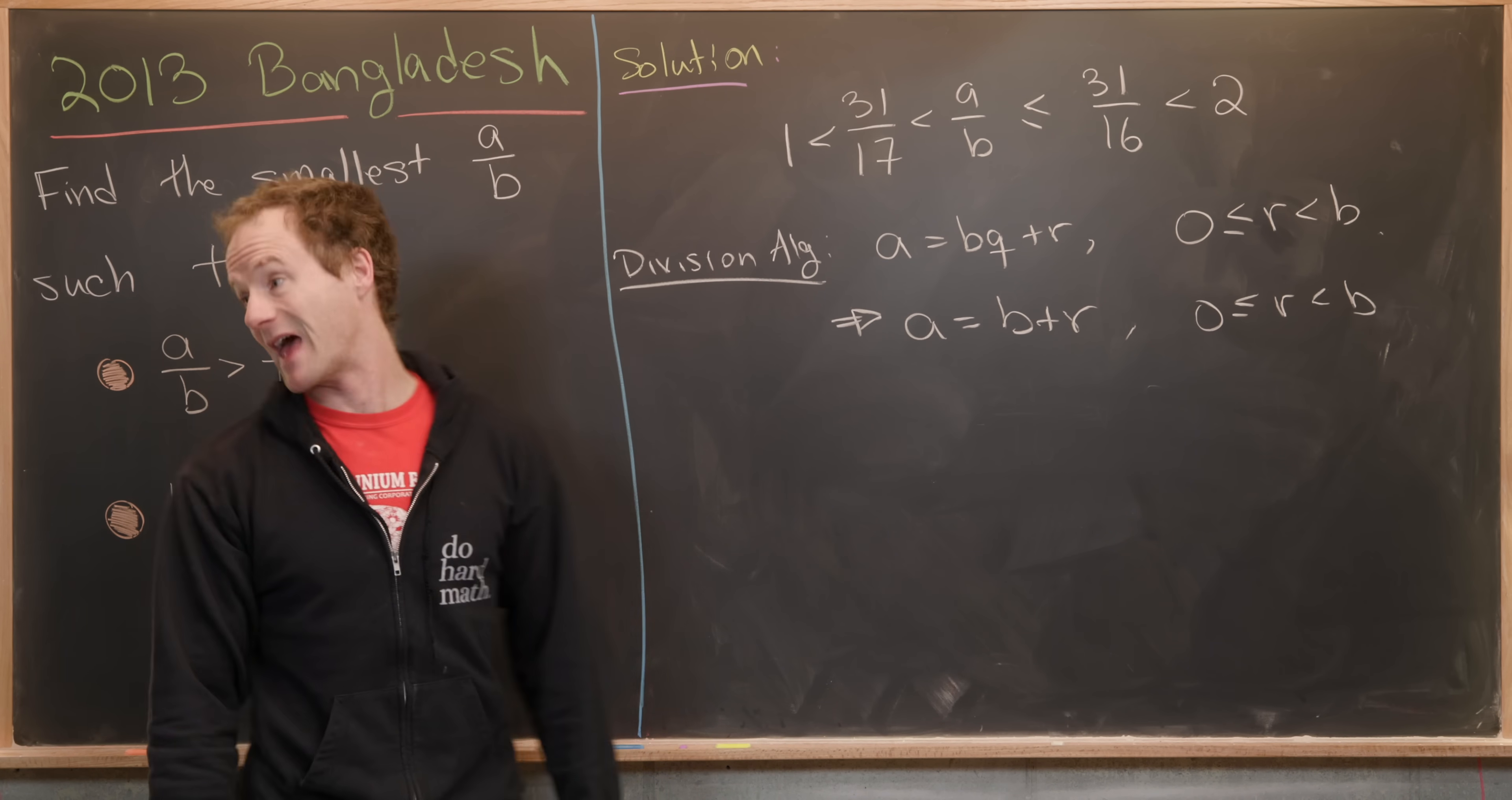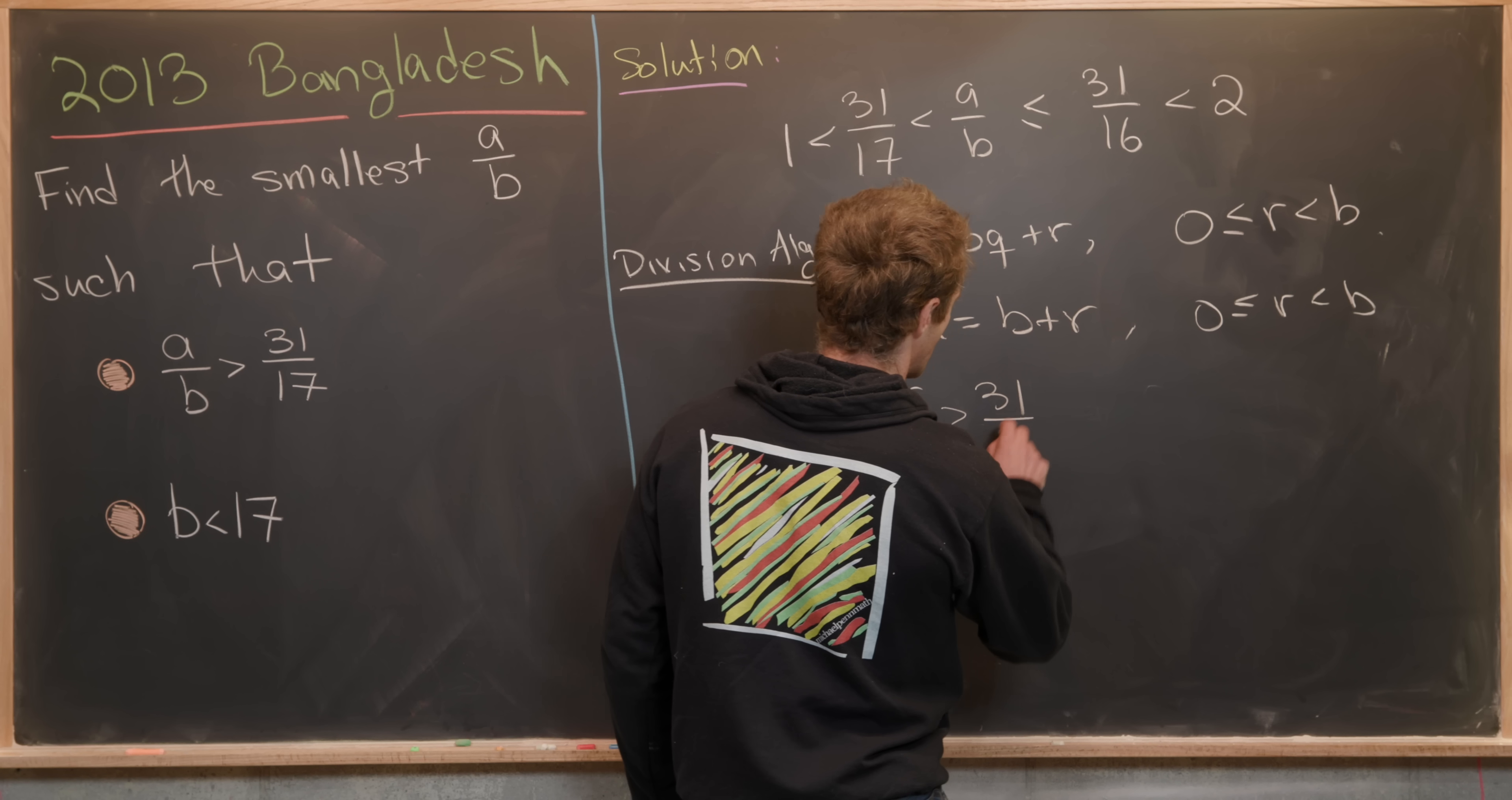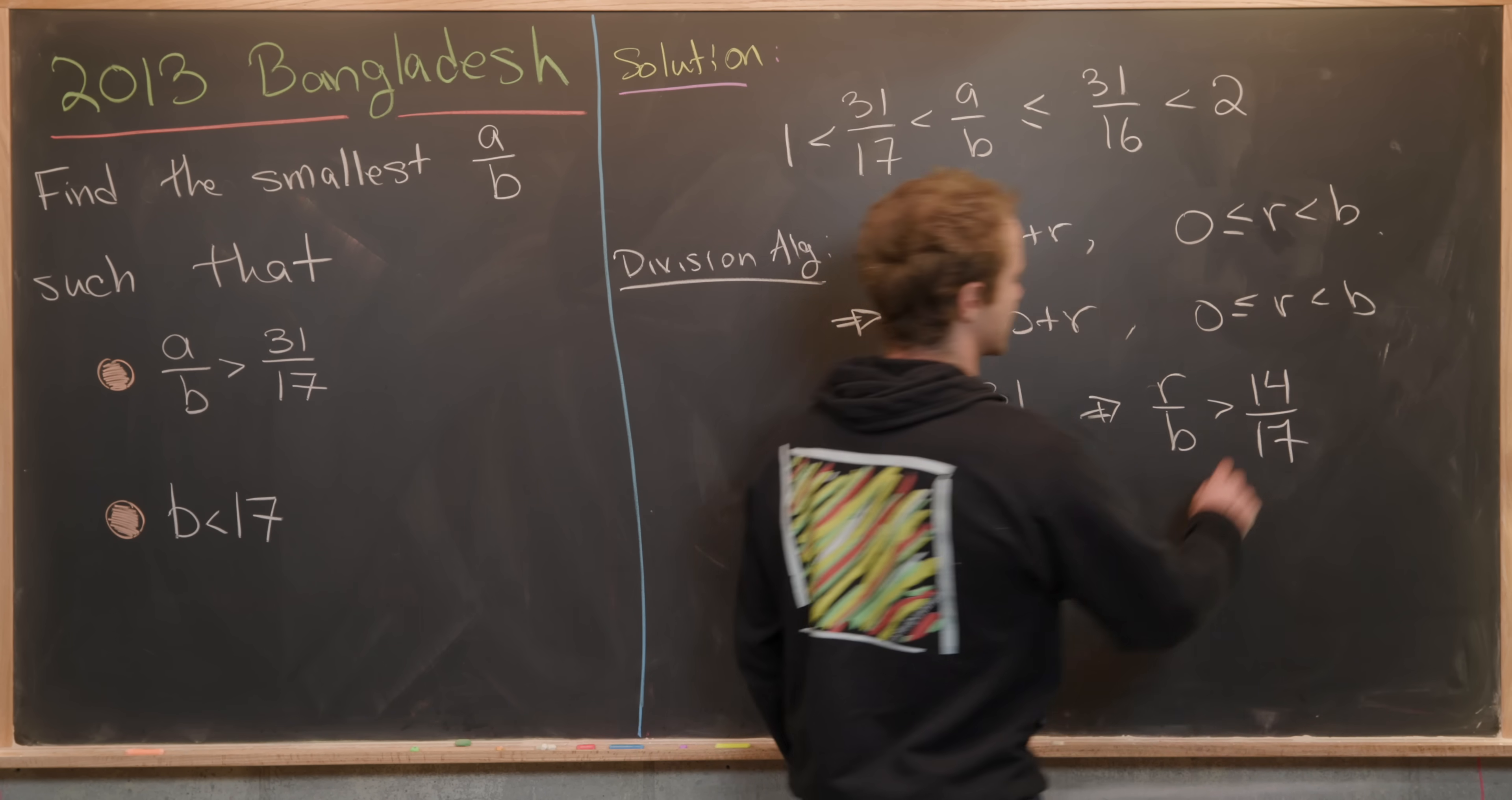Plugging in this expansion of A into our given inequality, we see that 1 plus R over B must be bigger than 31 over 17. We can reduce this by subtracting 1 from both sides, which tells us that R over B must be bigger than 14 over 17.